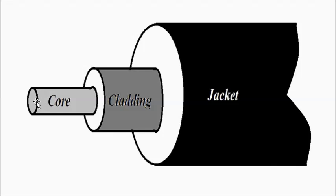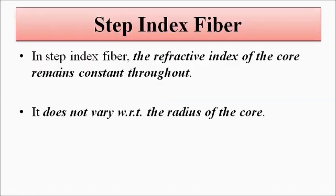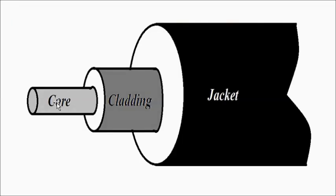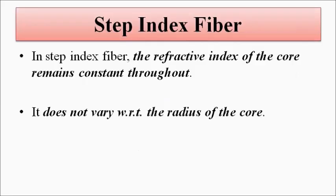It means at the middle of the core, the center of the core, the refractive index will be the same as at the outer surfaces. The refractive index is totally constant throughout the core — that is the step index fiber. We know that the core has the maximum refractive index in the optical fiber, but even though it has maximum refractive index, it is uniform. When it is uniform throughout the core region, it is called the step index fiber.